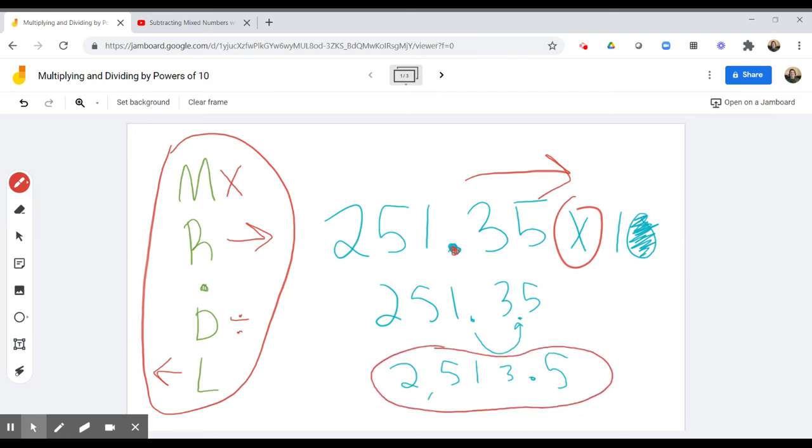And that makes sense because we end up with an answer that is larger than what we started out with. We started out with 251 and 35 hundredths. After multiplying this factor by 10, we end up with 2,513 and 5 tenths.